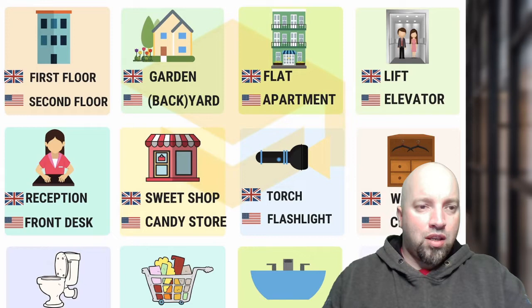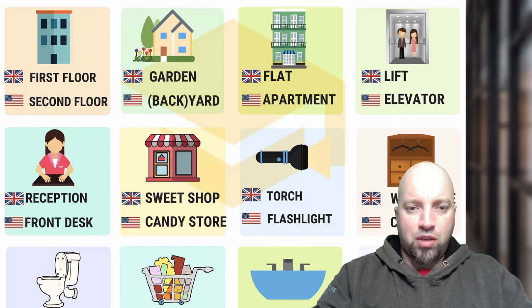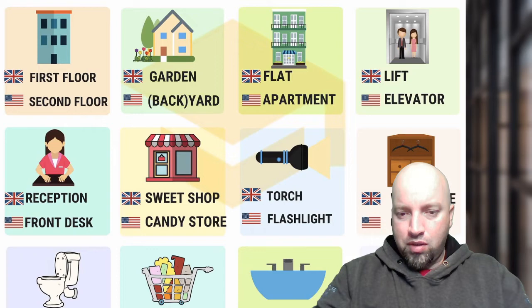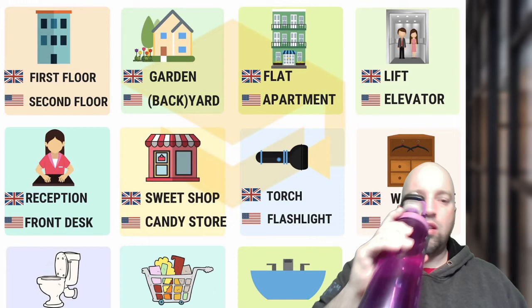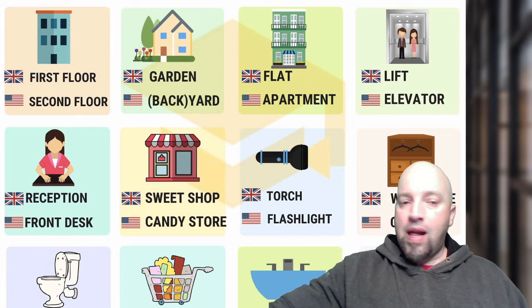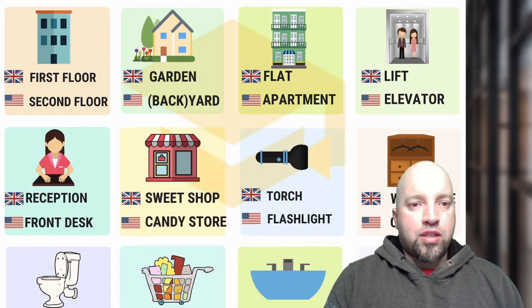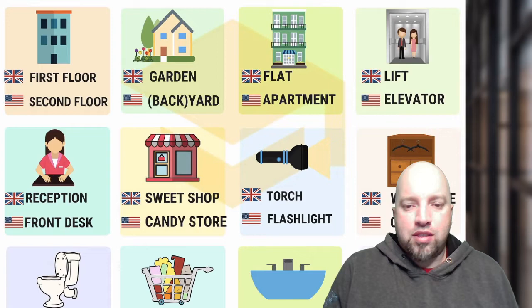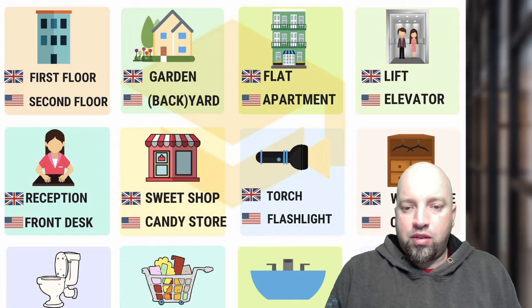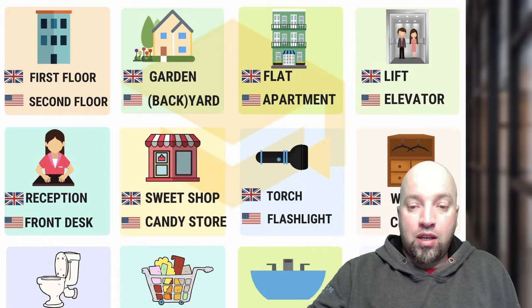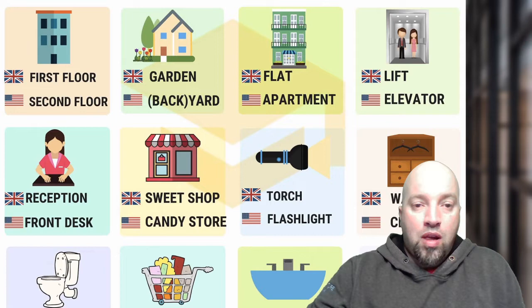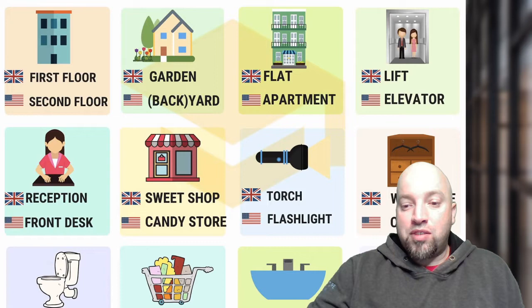This one's interesting: 'garden' and 'backyard' — we would just say 'backyard,' because a garden is somewhere where you grow flowers or food. Next one is 'flat' and 'apartment' — we would say 'apartment.' 'Lift' or 'elevator' — we would actually say 'elevator.' Danny says: unless there's a basement, the first floor is the lowest in American English.